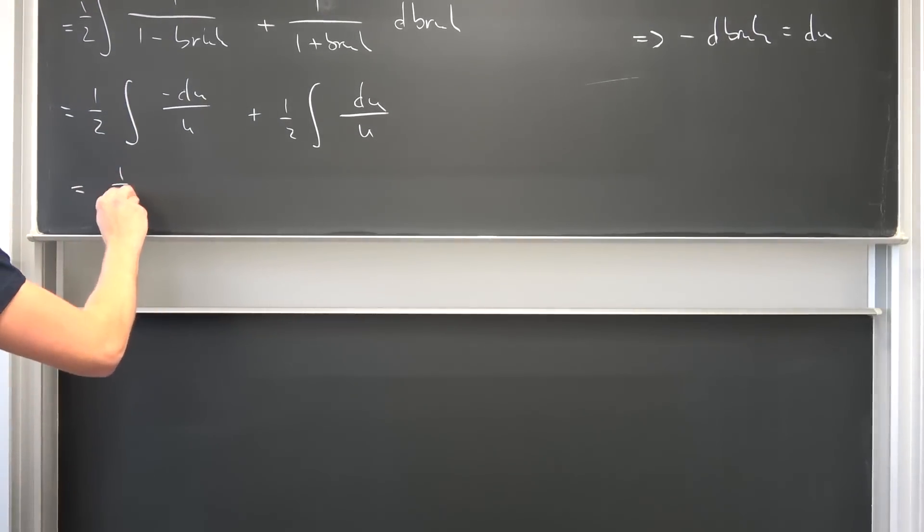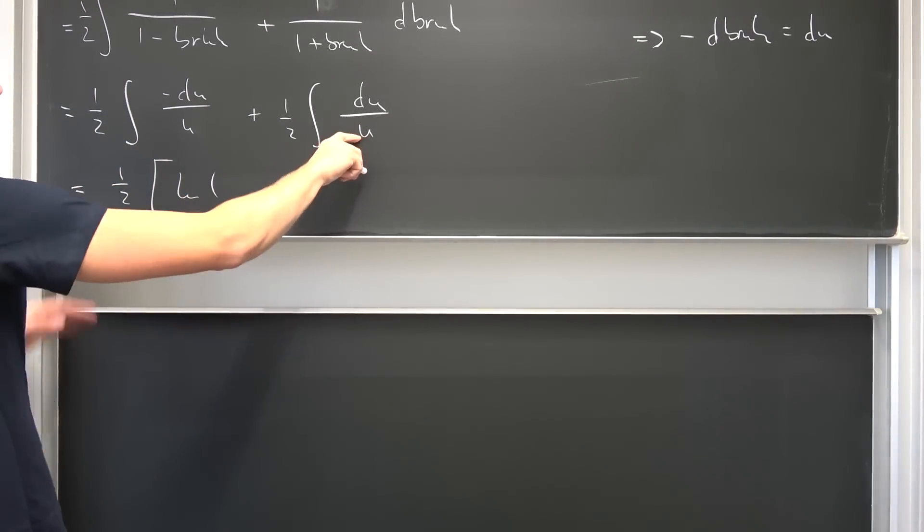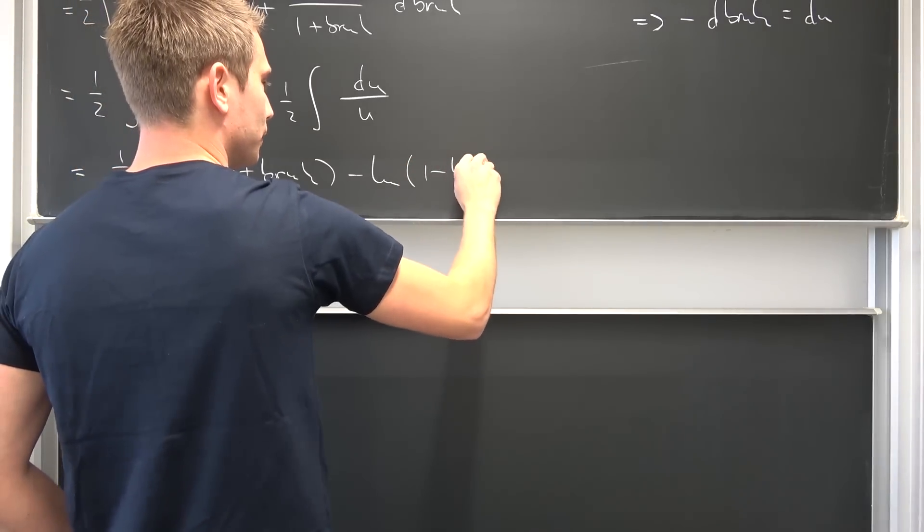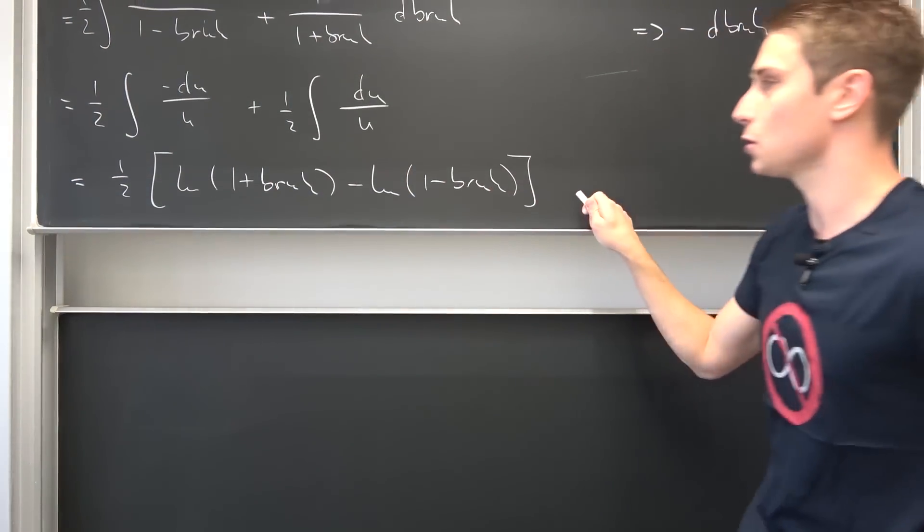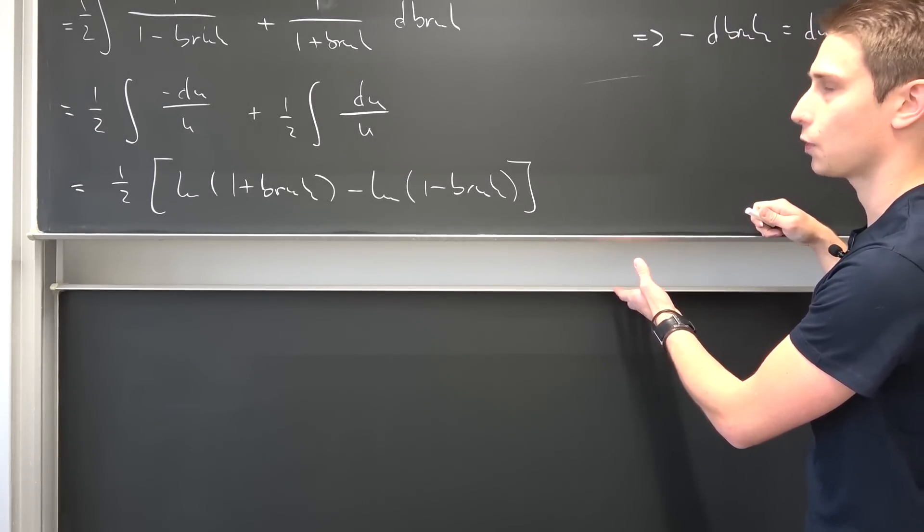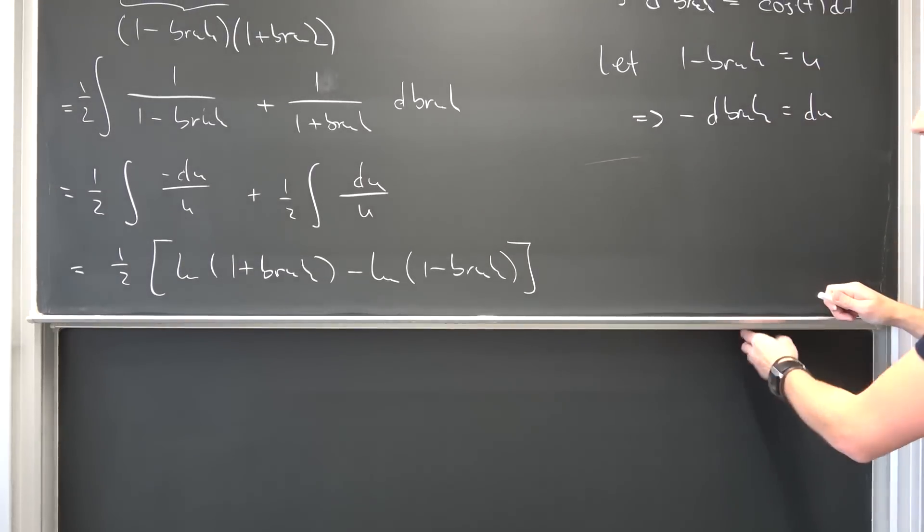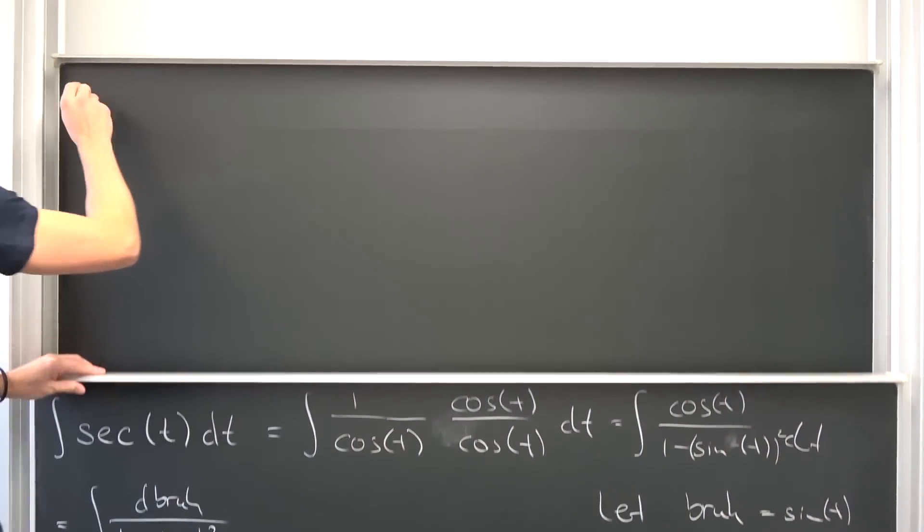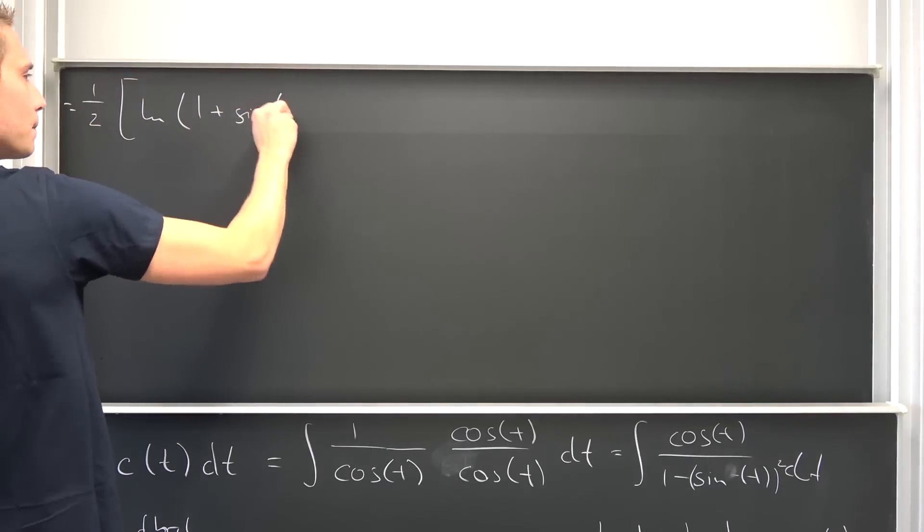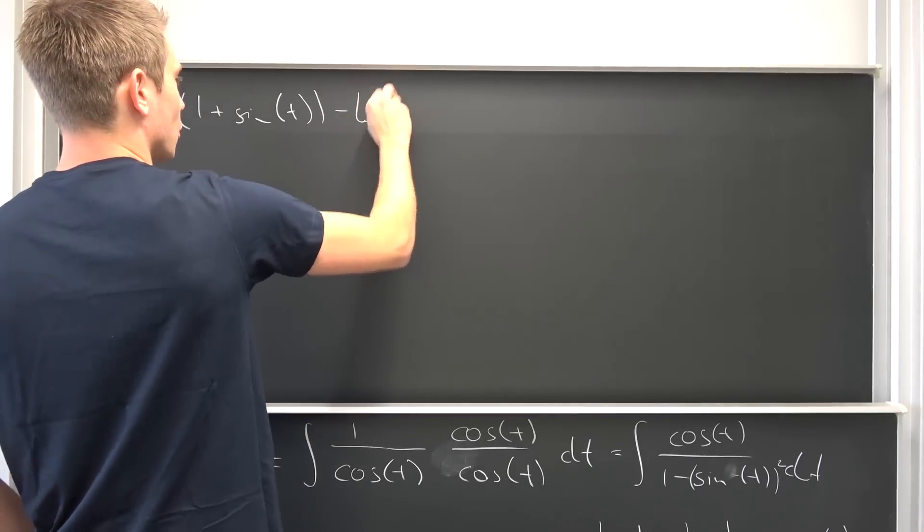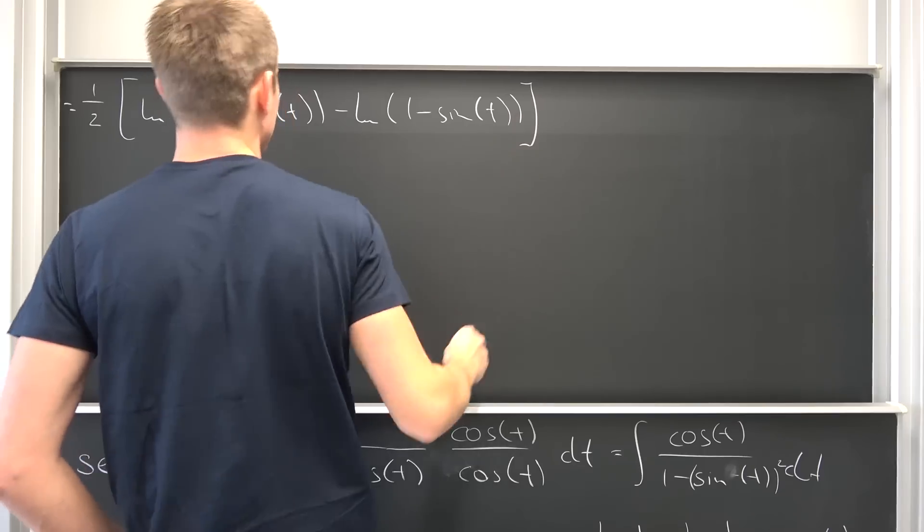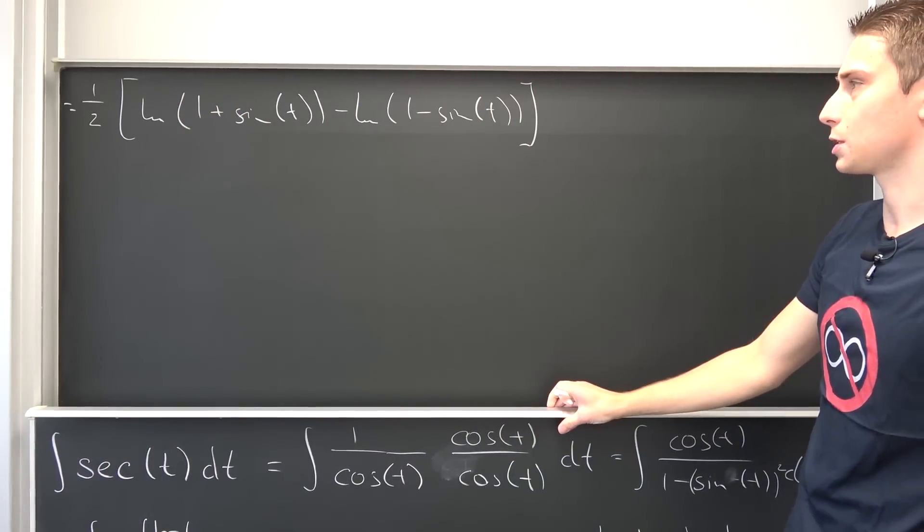And this is going to result in one half times the natural log of one plus bruh minus the natural log of one minus bruh. And now we can use natural log properties and bring those two together. Let us plug all the other stuff in. Bruh is nothing other than the sine. So we are going to have one half times the natural log of one plus the sine of t minus the natural log of one minus the sine of t.